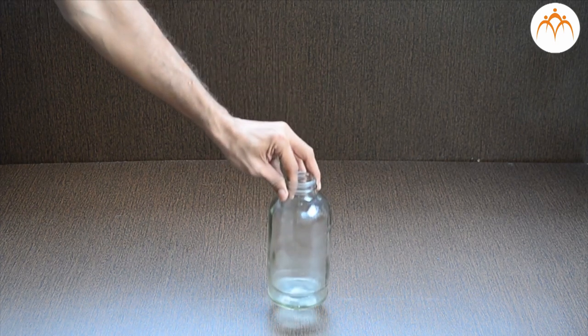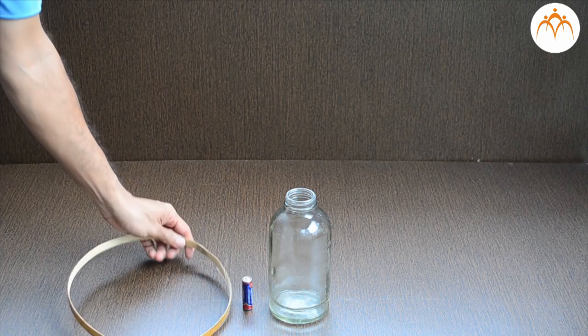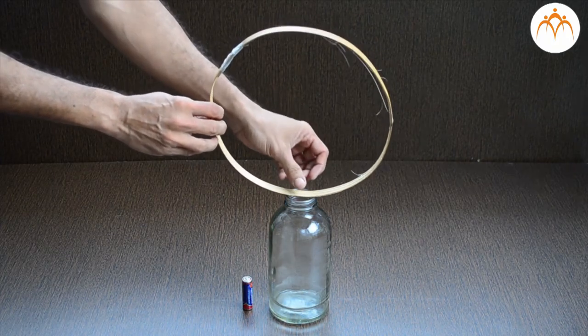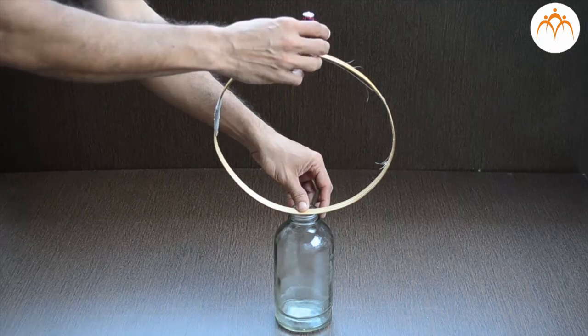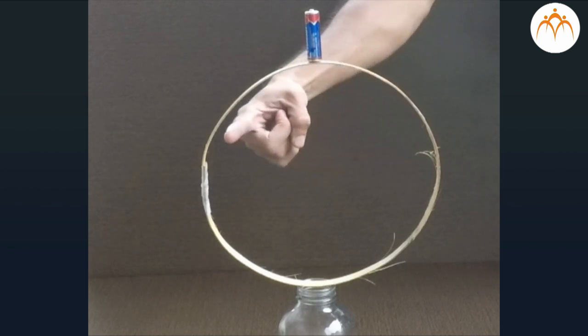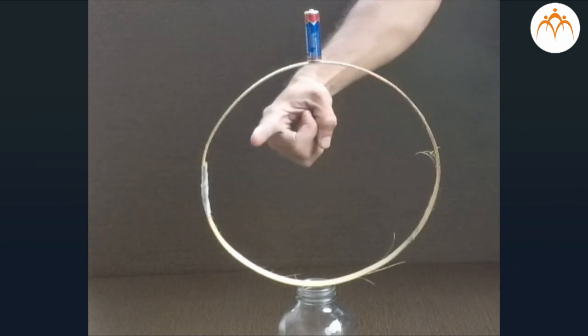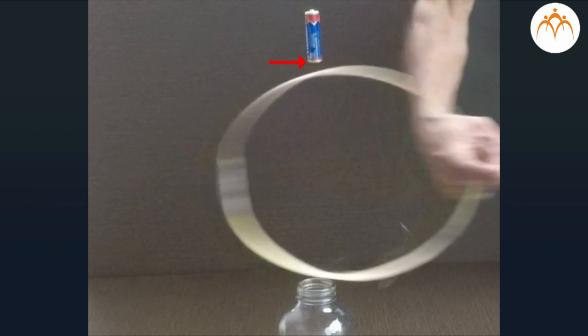Let us take a glass bottle, a AA cell or pencil cell, and a loop made from bamboo. I will place this loop on the bottle, with the cell placed exactly above the bottle. When the loop is suddenly taken out from underneath the cell, it remains in place momentarily. This is because of inertia alone — the cell stays at rest and remains at rest even when the loop disappears.